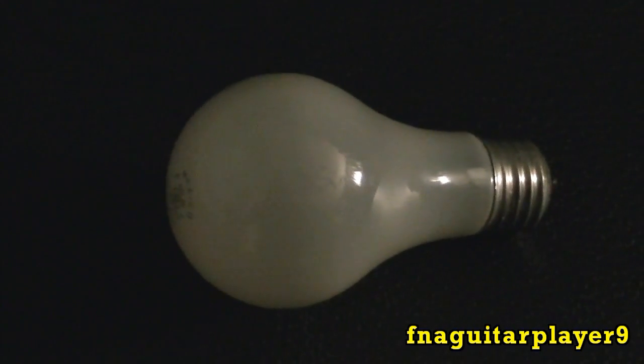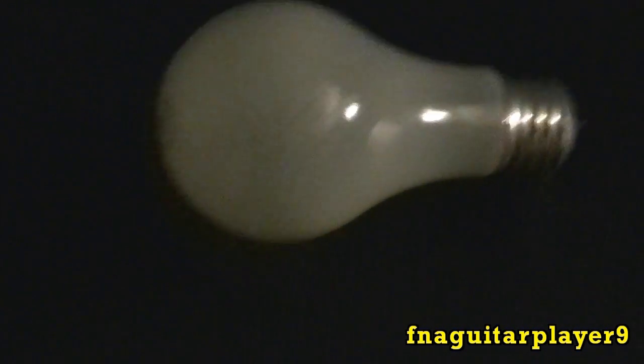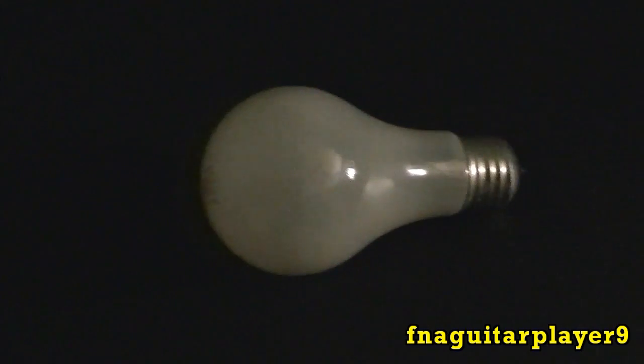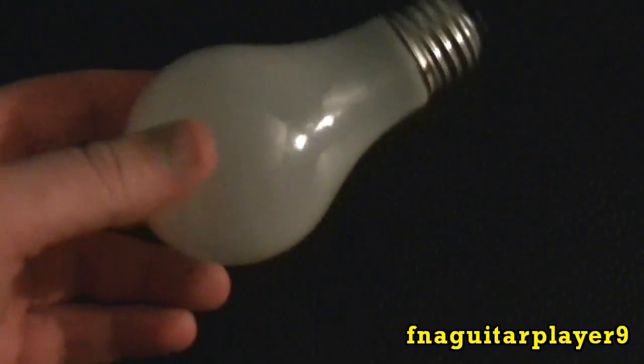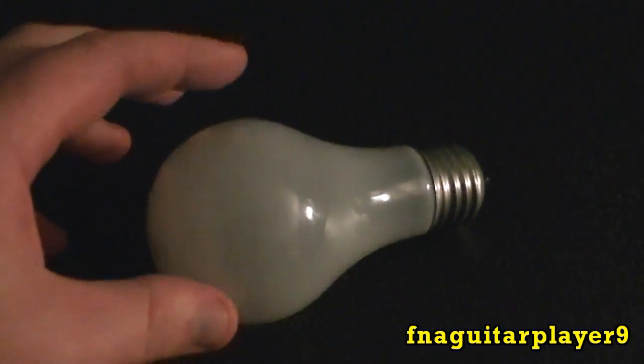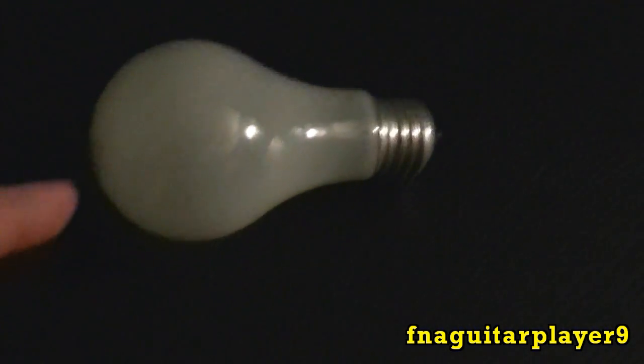All it is is a standard 60-watt light bulb, but it's got a loose filament on it. If you listen, you can hear the filament shaking. That's usually not a good way to check a light bulb to see if it's good, because sometimes the filament can just be loose but it'll still work.